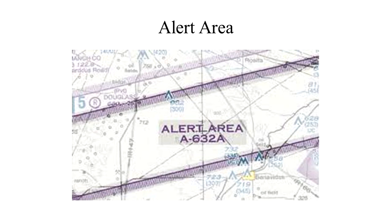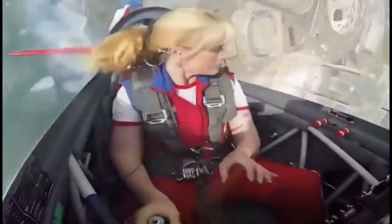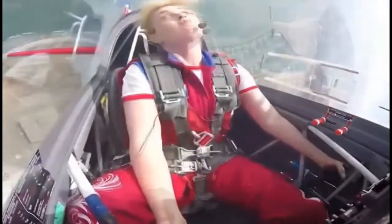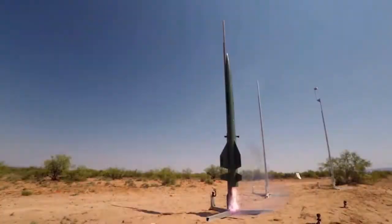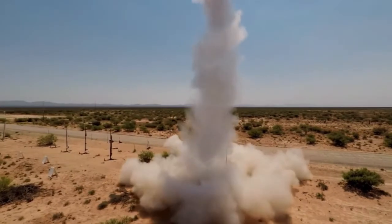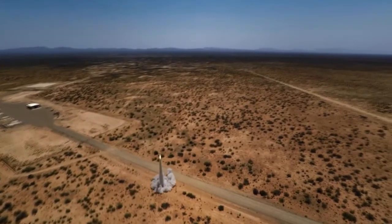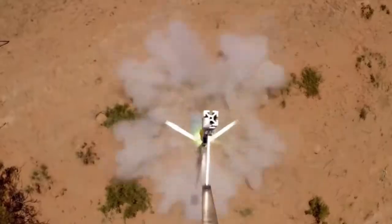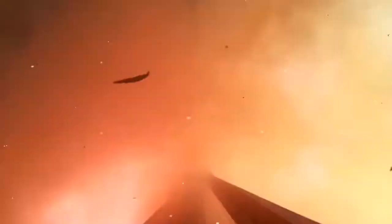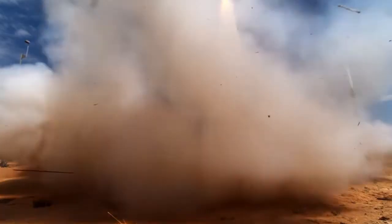Alert areas are depicted on aeronautical charts with an A followed by a number, like A-632-A, to inform non-participating pilots of areas that may contain a high volume of pilot training or an unusual type of aerial activity. Controlled firing areas, or CFAs, contain activities that, if not conducted in a controlled environment, could be hazardous to non-participating aircraft. The difference between CFAs and other special use airspace is that activities must be suspended when a spotter aircraft, radar, or ground lookout position indicates an aircraft might be approaching the area. There is no need to chart CFAs, since they do not cause a non-participating aircraft to change its flight path.